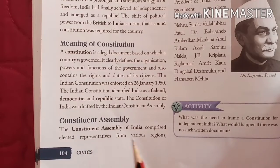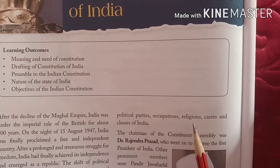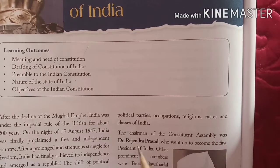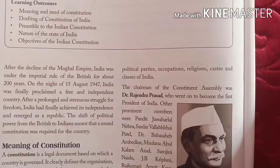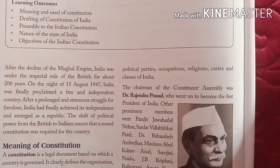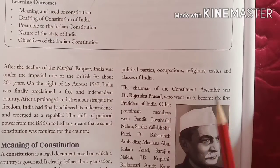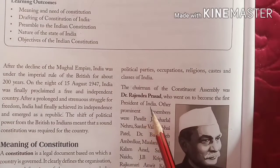The Constituent Assembly of India comprised elected representatives from various regions, political parties, occupations, religions, caste and classes of India. The chairman of the Constituent Assembly was Dr. Rajendra Prasad, who went on to become the first President of India.